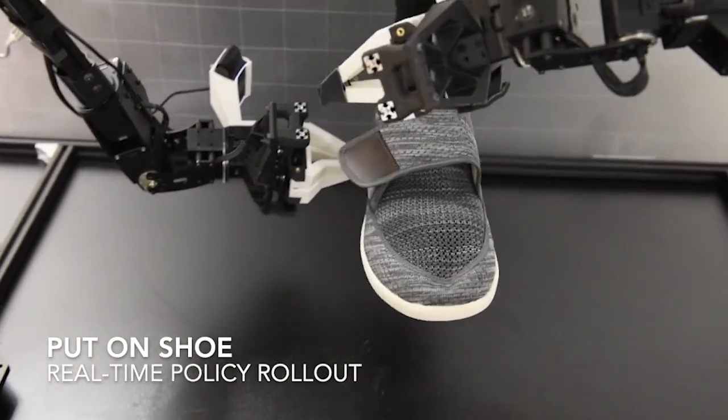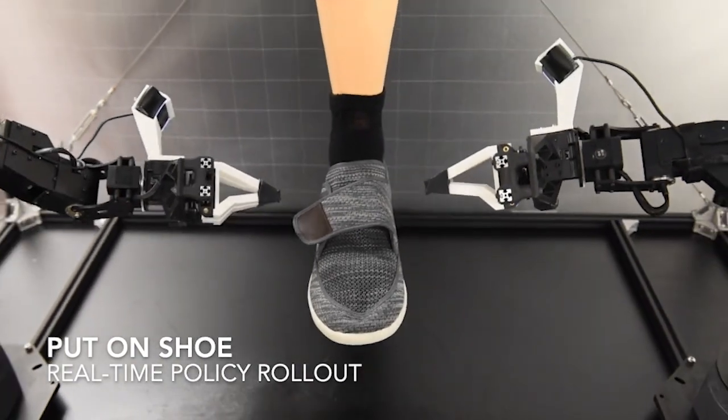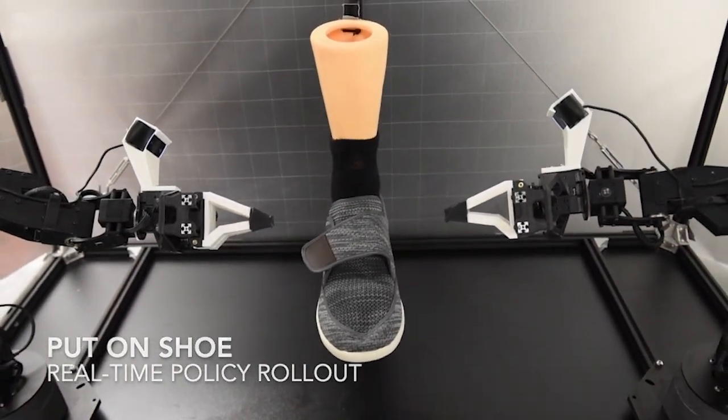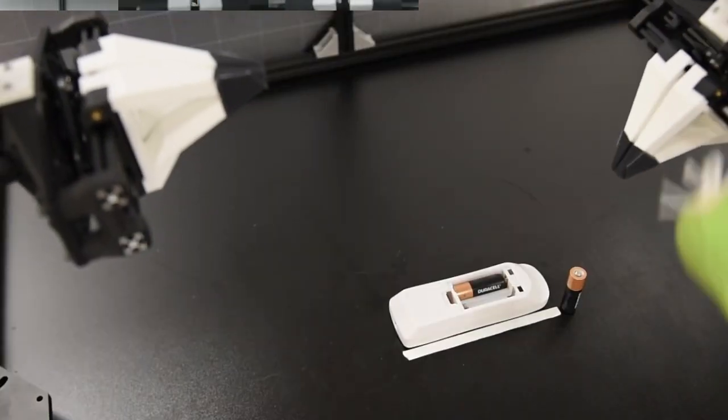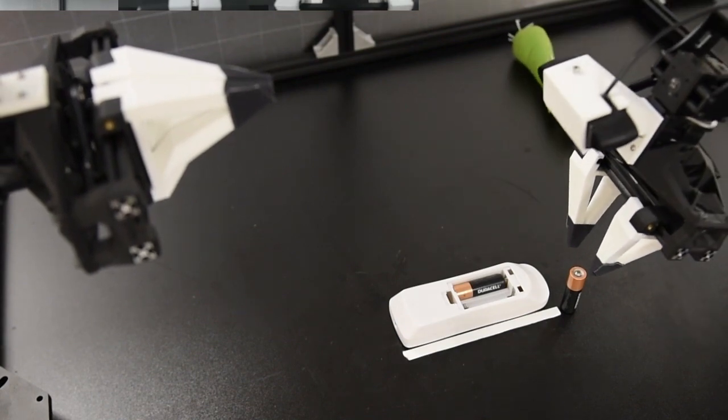Reactiveness: ACT policy can react to novel environment disturbances instead of only memorizing the training data. Robustness: ACT policy is also robust against certain level of distractors.